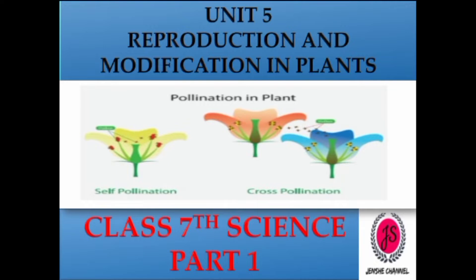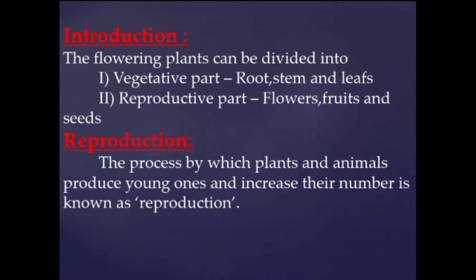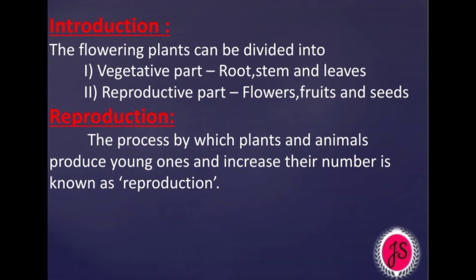Hello students. Welcome to Gen Z channel. In this video, we are covering Unit 5: Reproduction and Modification in Plants from the 7th standard science book. The flowering plants can be divided into a vegetative part and a reproductive part. The vegetative part consists of root, stem and leaves, and the reproductive part consists of flowers, fruits and seeds.